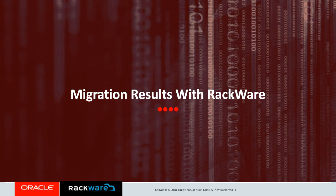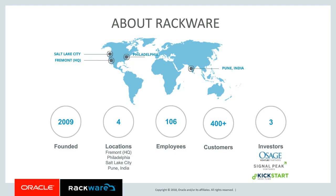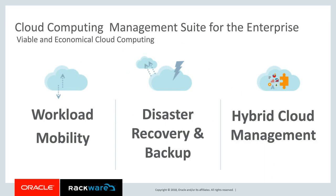Thanks, Rajiv. Rackware was founded in 2009 with four locations: headquarters in Fremont, California (Silicon Valley), and offices in Salt Lake City, Philadelphia, and Pune, India. We're just over 100 employees, growing rapidly, with well over 400 production customers. Rackware has a software management suite for cloud, enterprise-focused, handling large complex workloads and tiered applications. The software supports multiple use cases: migration, disaster recovery, and a hybrid cloud management package.